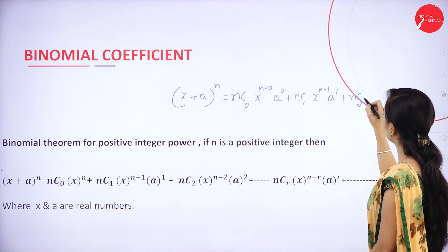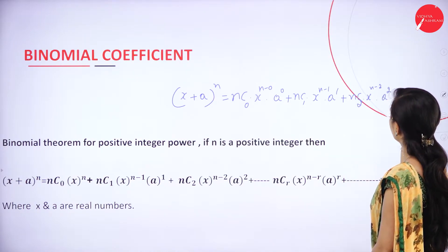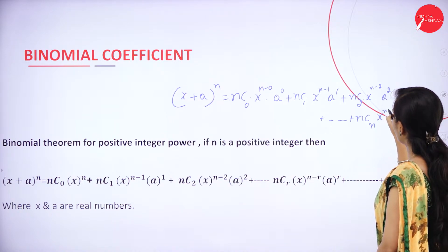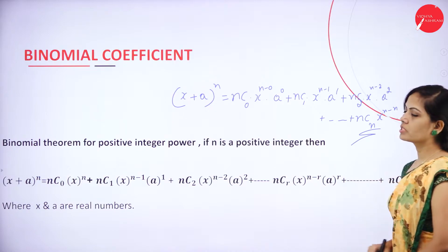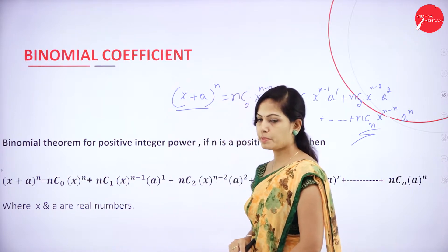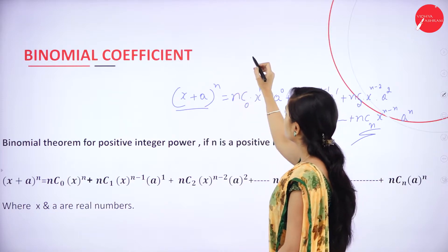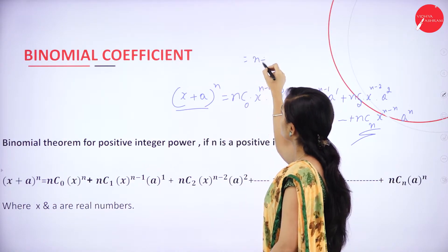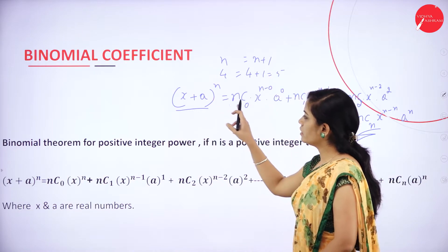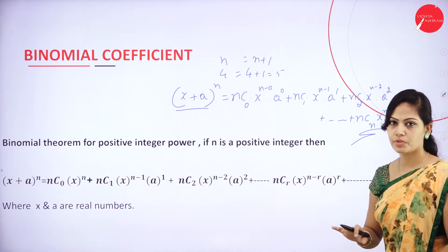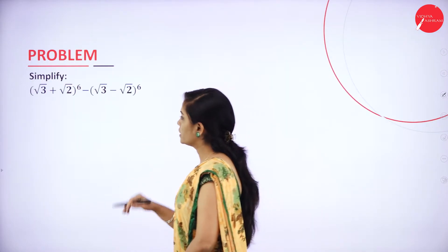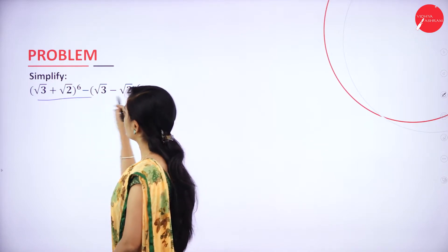And nc2 x power n minus 2, a power 2, plus up to ncn, difference is n minus n, into a power n. In the expansion formula for binomial coefficient, if you have two terms in the expression it is binomial, and if the power value is n the number of terms are n plus 1. If your power value is 4 you will get 4 plus 1 = 5 terms. This is a basic thing you have to understand in binomial coefficient. Today I will explain the next important problems.